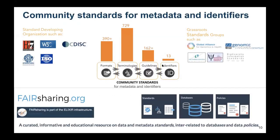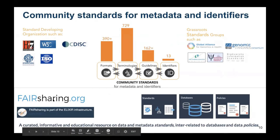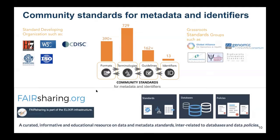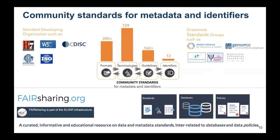There are tools and resources to help you survey different domains. You may operate in very different fields, but there are three things you will be dealing with: data formats, data structures, terminologies, and guidelines and identifiers. Examples of standard-developing organizations include HL7, ISO, W3C, and CDISC in the clinical domain. There are also grassroots standards like the Genomic Standard Consortium Alliance, the HUPO-PSI, and the Global Alliance for Genomics and Health. To navigate this sea of standards, you can go to fairsharing.org, which gives you an overview and the relationships between standards, databases, and policies, helping you find the relevant resources for your domain to establish a data management plan.